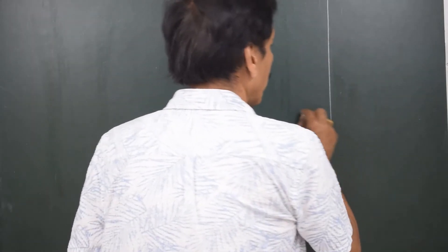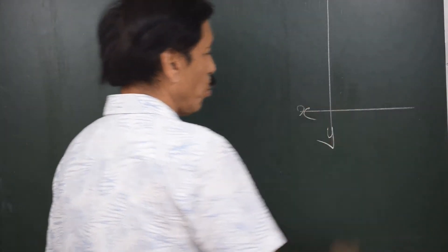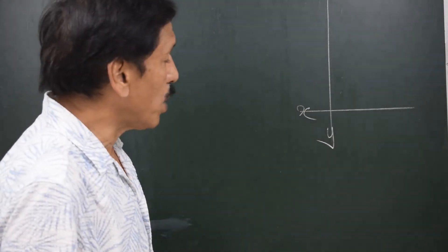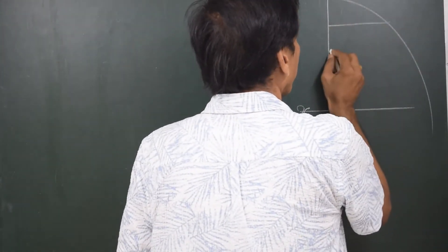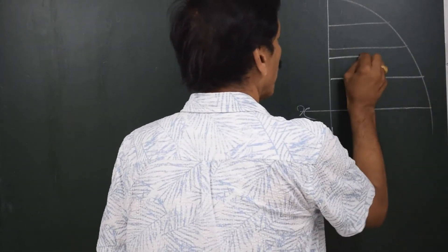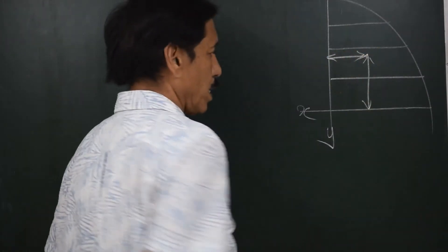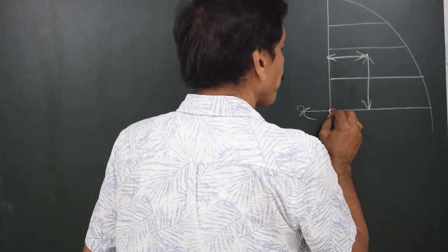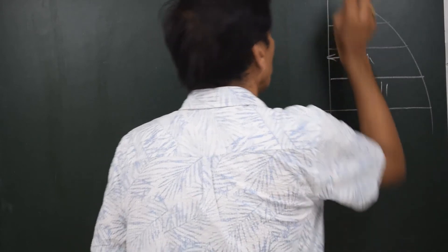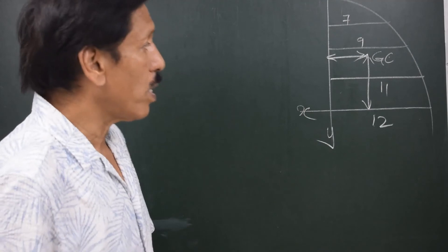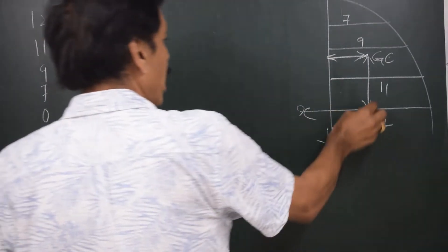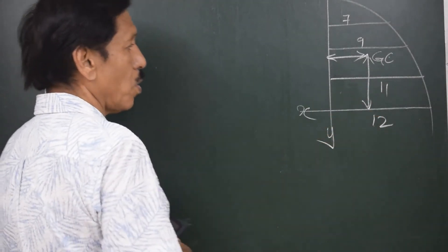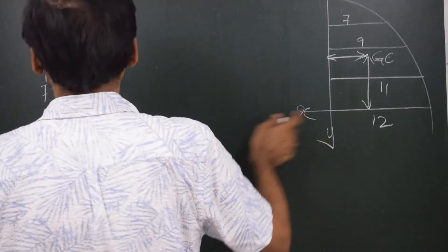We will do one more similar question in this category where a shape is given — there is a curve given with respect to the x-axis and y-axis. You might be given the diagram or a description whereby you draw it. The ordinates are 12, 11, 9, 7, and 0. You have to find the distance of the geometric centroid from the x-axis and the y-axis. We write the ordinates starting from 12, because we need to find the position of the centroid from that ordinate.